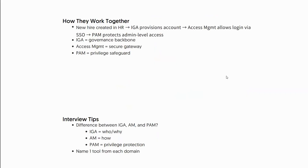Here's an example of how they work together: a new hire is created in HR. IGA provisions the account. Access Management allows them to log in and PAM protects admin-level access. IGA is the governance backbone, Access Management is the secure gateway, and PAM is the privileged safeguard.